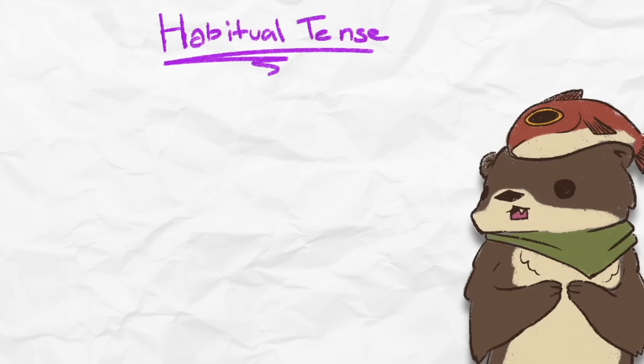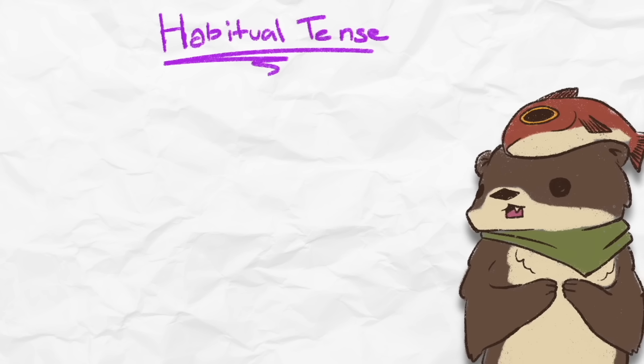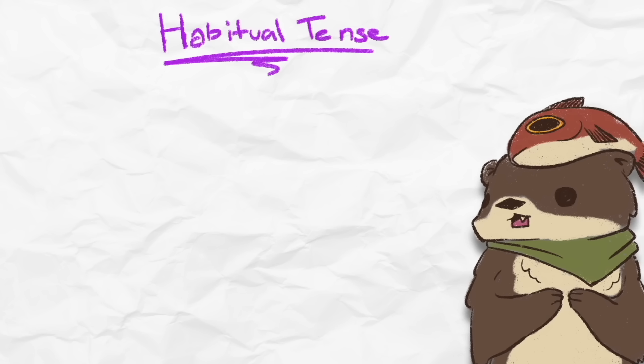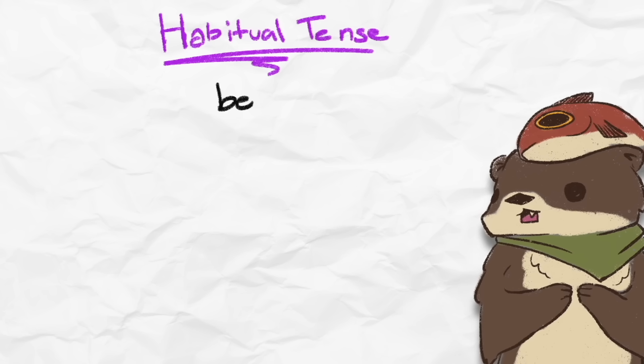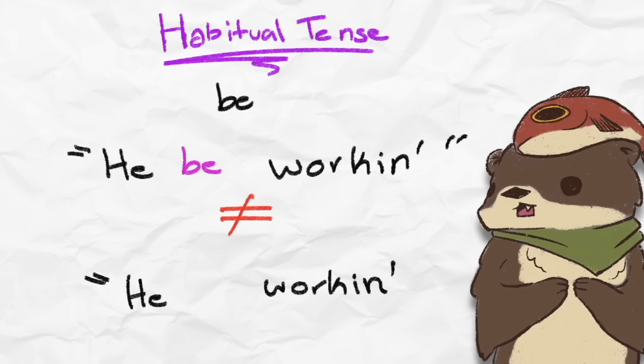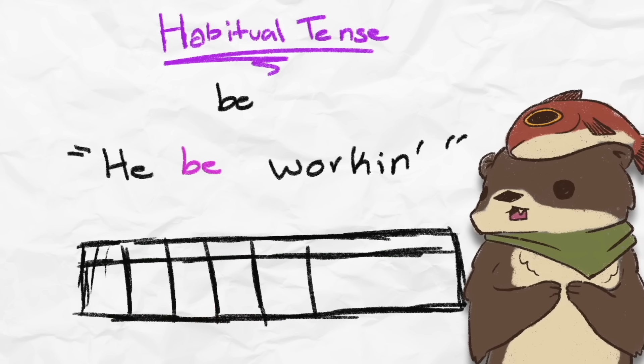For example, AAVE has the habitual tense, which general American English doesn't have. You most likely have heard it be used before or have even used it yourself. The habitual tense in AAVE is done by adding the word be before the verb, like, he be working. This doesn't mean that he's currently working, but that he is in the routine of working.